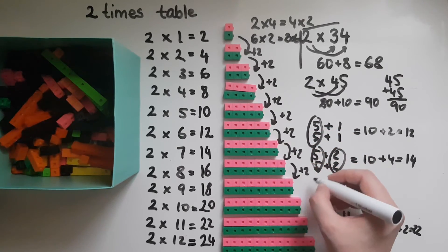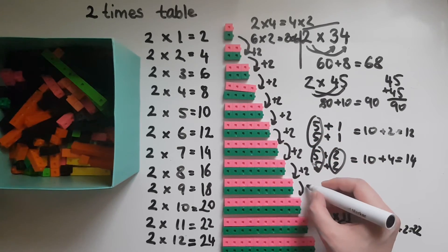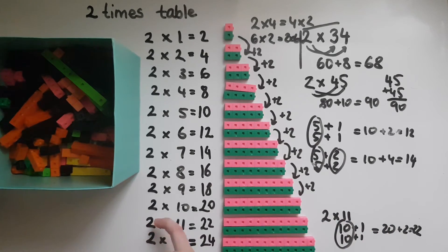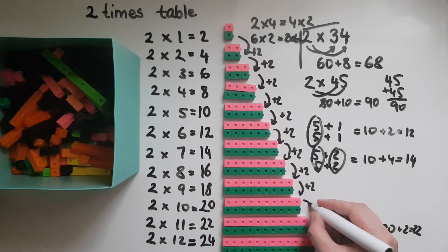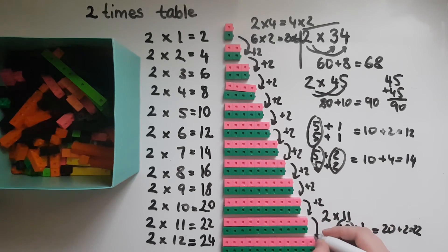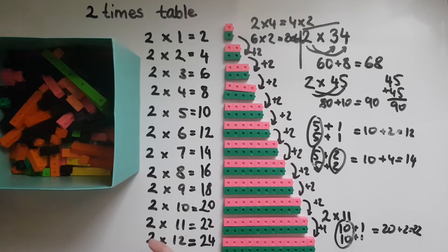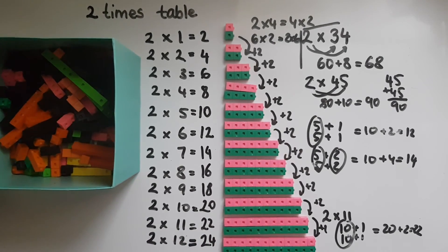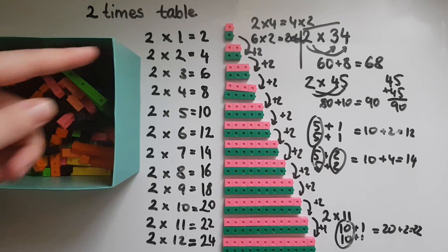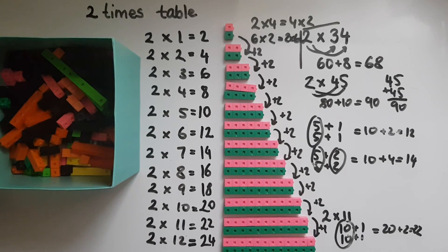This pattern continues throughout. If you know two times ten is twenty, to get two times eleven just add another two to make twenty-two. If you know two times eleven is twenty-two, add another two to get two times twelve, which is twenty-four. Write this pattern on a poster or a piece of paper and go over it maybe three times or more until you've memorized it in order.